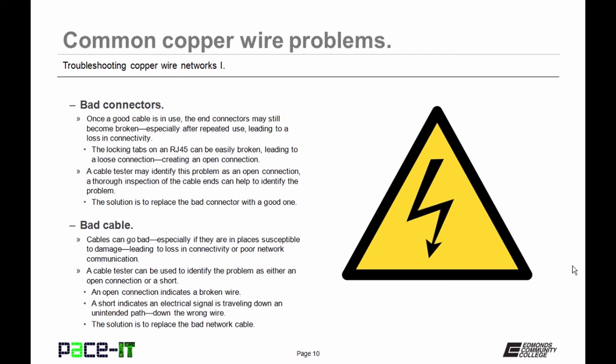Then there are bad cables. Cables can go bad, especially if they are in places susceptible to damage, leading to loss in connectivity or poor network communication. A cable tester can be used to identify the problem as either an open connection or a short. An open connection indicates a broken wire. A short indicates an electrical signal traveling down an unintended path, as in down the wrong wire. The solution is to replace the bad network cable.